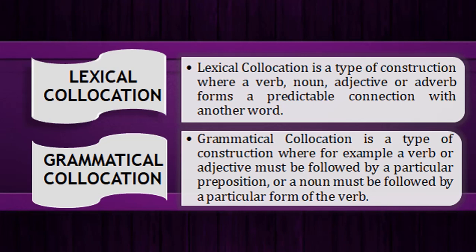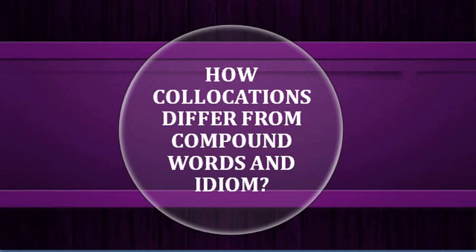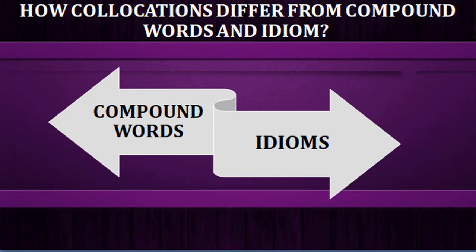Now, how does collocation differ from compound words and idioms? Collocation should not be confused with idioms, although both share a degree of meaning that is not entirely compositional. Let's discuss compound words and idioms one by one. Compound words are words formed by joining two or more words together — for example, 'bookstore,' 'post office,' 'narrow-minded.' When used separately, 'narrow' and 'minded' have different meanings, but together 'narrow-minded' becomes a compound word with its own meaning. This is not collocation.